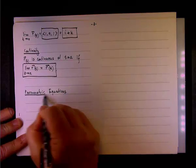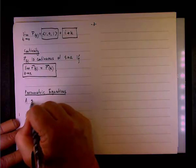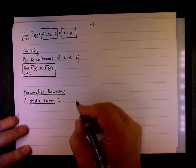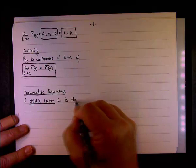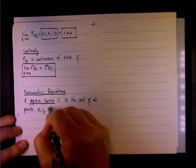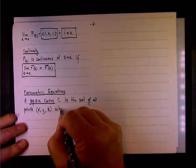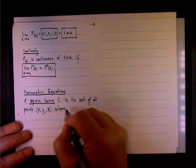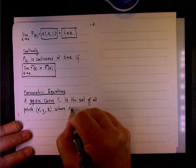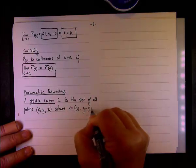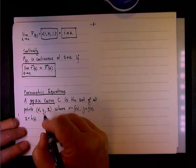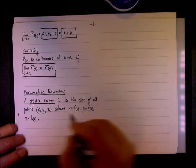So parametric equations - we can talk about the space curve and we're going to say that the space curve C is the set of all points (x, y, z) where x equals f(t), y equals g(t), z equals h(t).